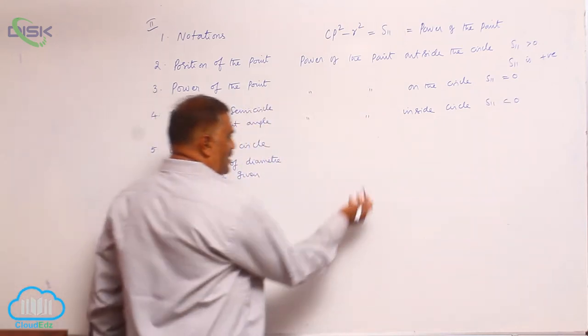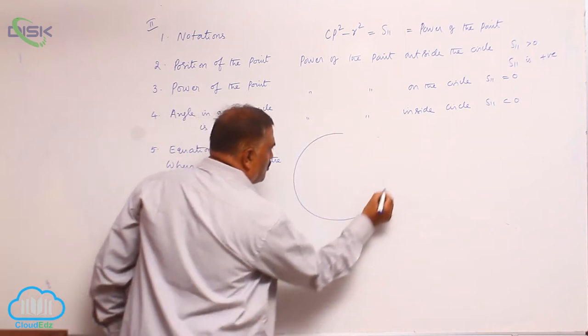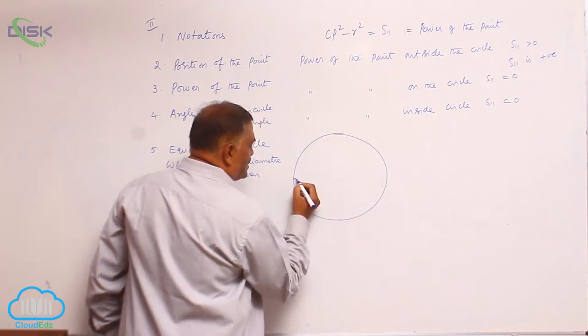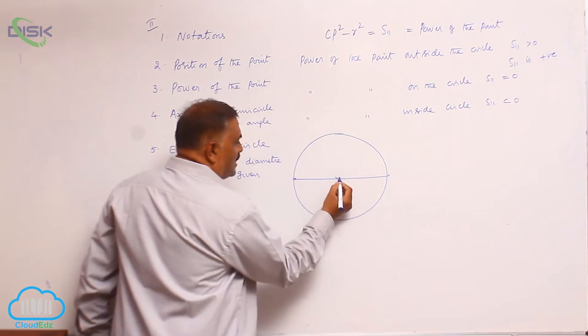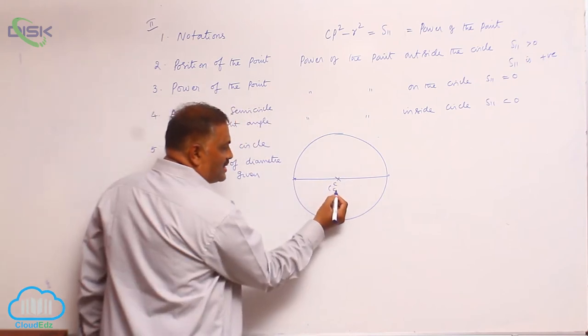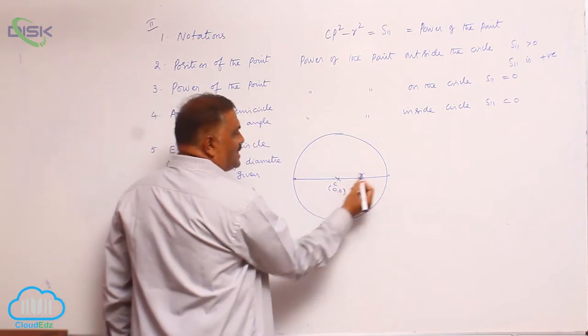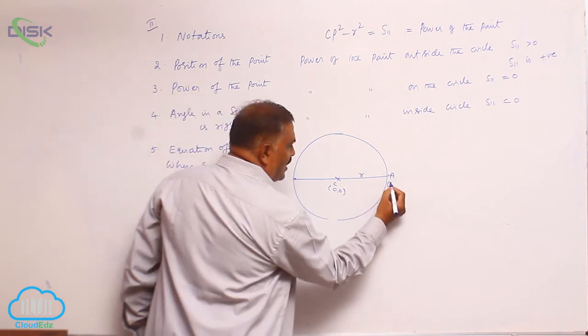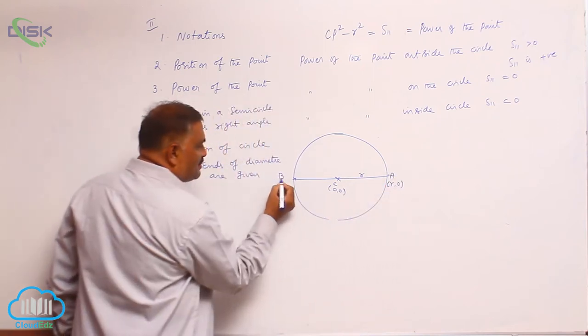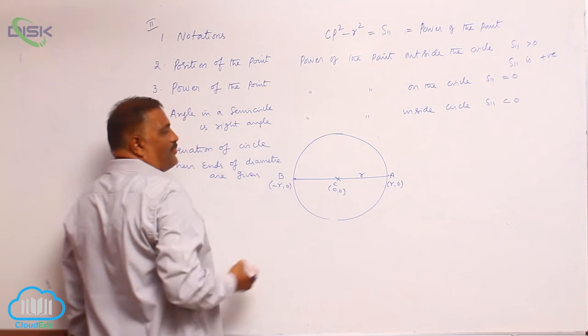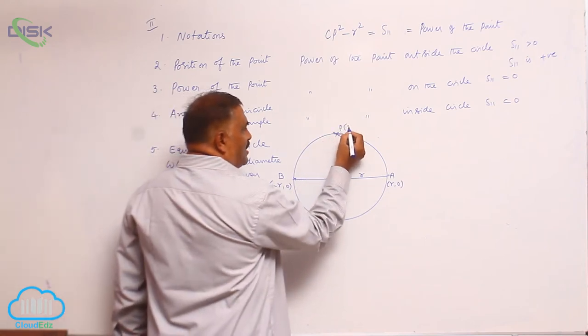Now, based on this, let us see one more basic concept. Suppose you take the standard equation of circle C(0,0) radius R. It is A(R, 0), this is B(-R, 0), and P(x, y) be any point.